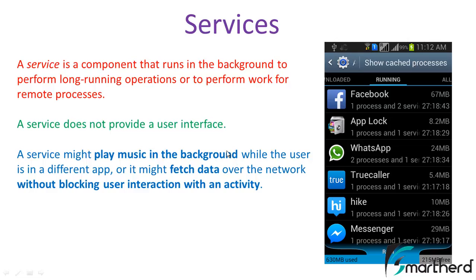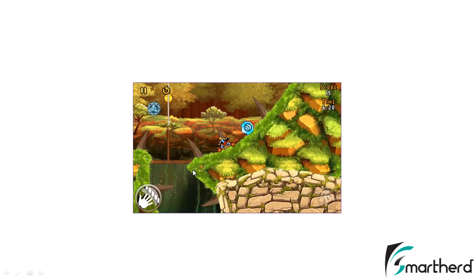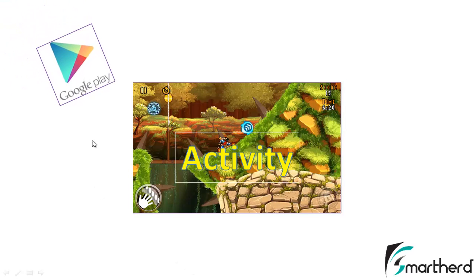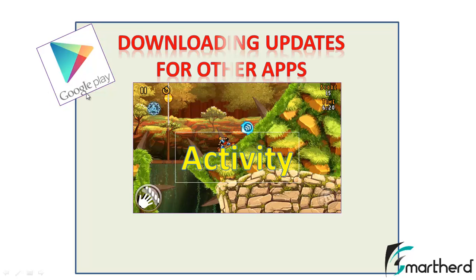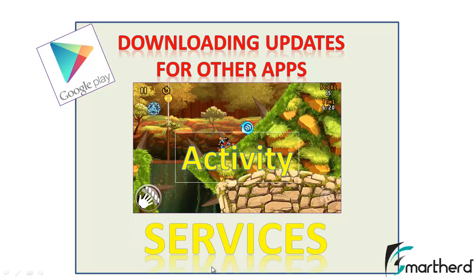Suppose you are using WhatsApp and at the background you are playing music — that background music being played is actually a service provided by your smartphone. Services can be started by an activity of your application. For example, suppose you are playing a game — the screen you are watching in front of you is the activity. At the background, the Google Play Store app automatically updates your other applications if updates are available on the Play Store server. This Play Store app downloads the updates for other applications while you play your game — you may or may not know this process is going on in the background. This background process of downloading updates for other applications is actually known as services.